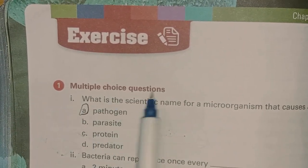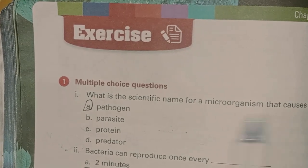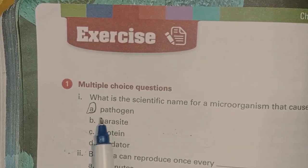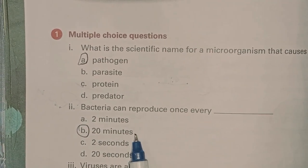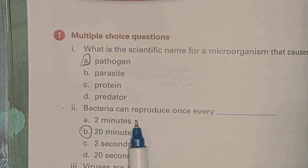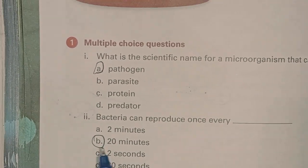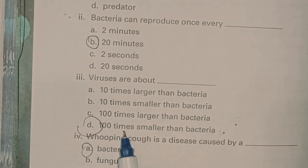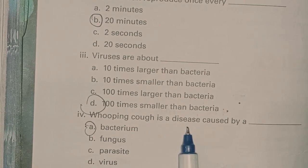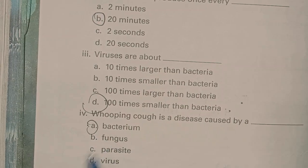Exercise, first question — multiple choice: what is the scientific name for a microorganism that causes a disease? The correct option is pathogen. Bacteria can reproduce once every twenty minutes. Viruses are about a hundred times smaller than bacteria. Whooping cough is a disease caused by a bacterium — bacterium is the correct option.